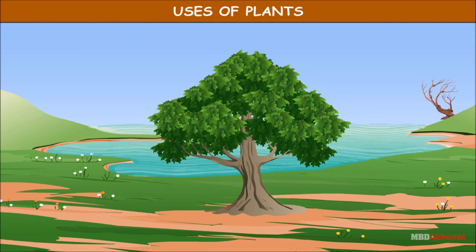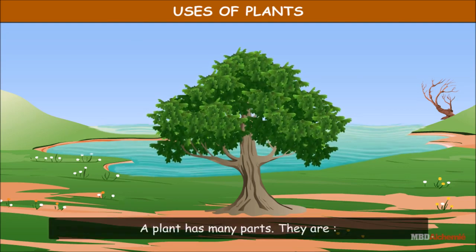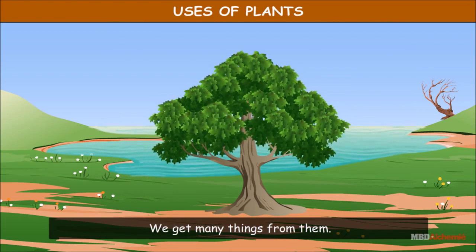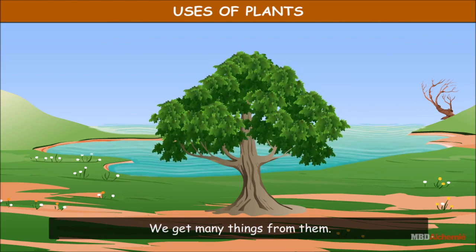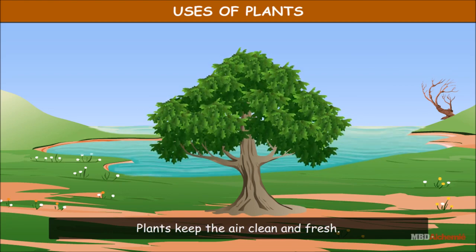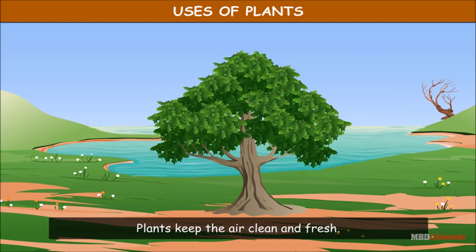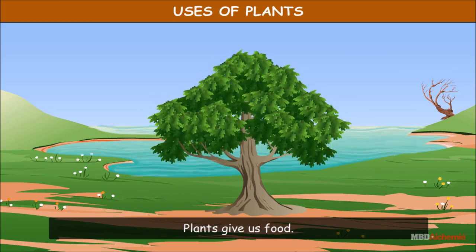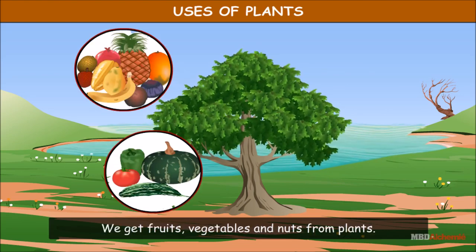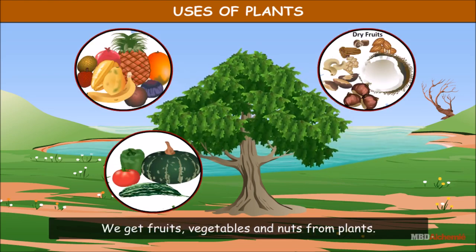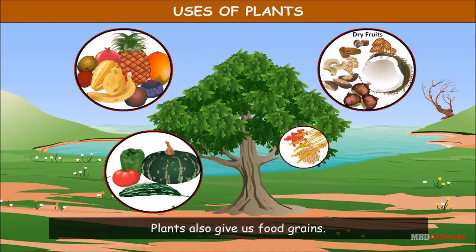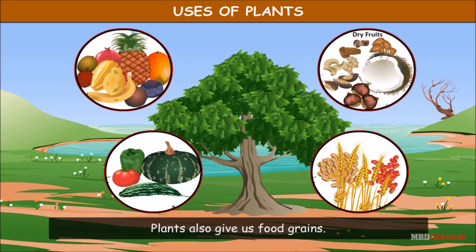Uses of plants: Plants are very useful to us and we get many things from them. Plants keep the air clean and fresh. We get fruits, vegetables, and nuts from plants. Plants also give us food grains.